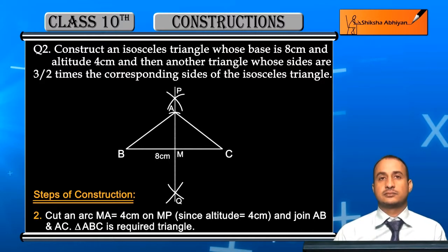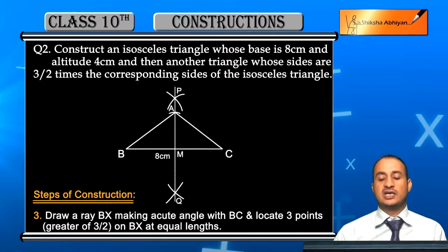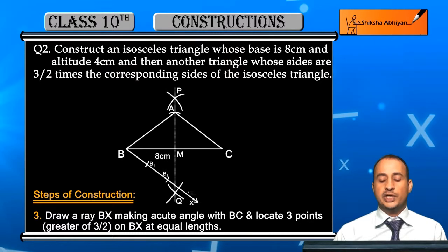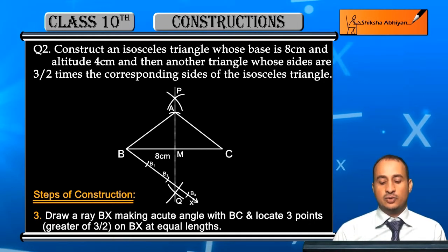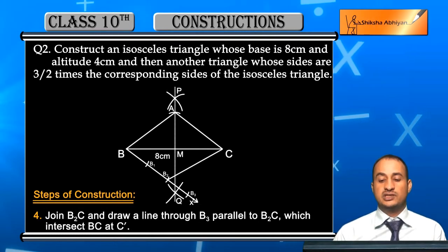Now to construct the 3/2 scaled triangle, draw a ray BX making an acute angle with BC. Then locate three points — B1, B2, B3 — on BX at equal distances, because the greater value is 3 from the ratio 3/2. Then join B2 to C, and from B3 draw a line parallel to B2C which intersects BC extended at C'.